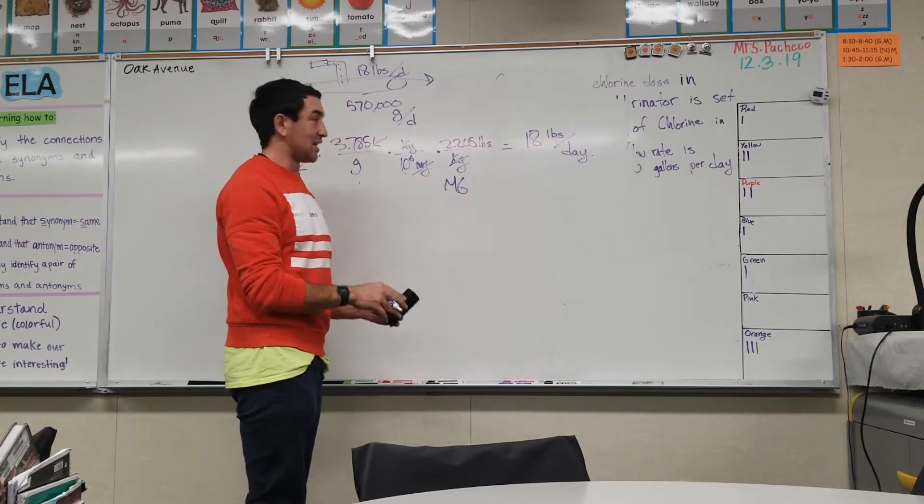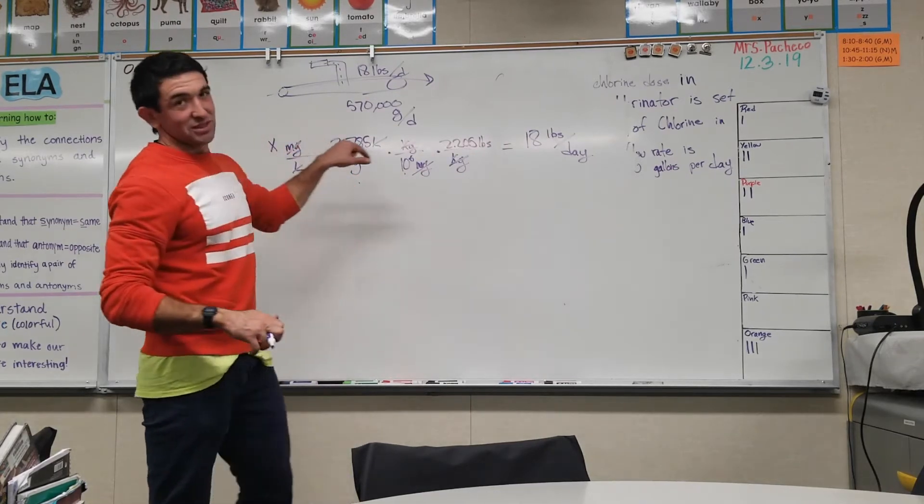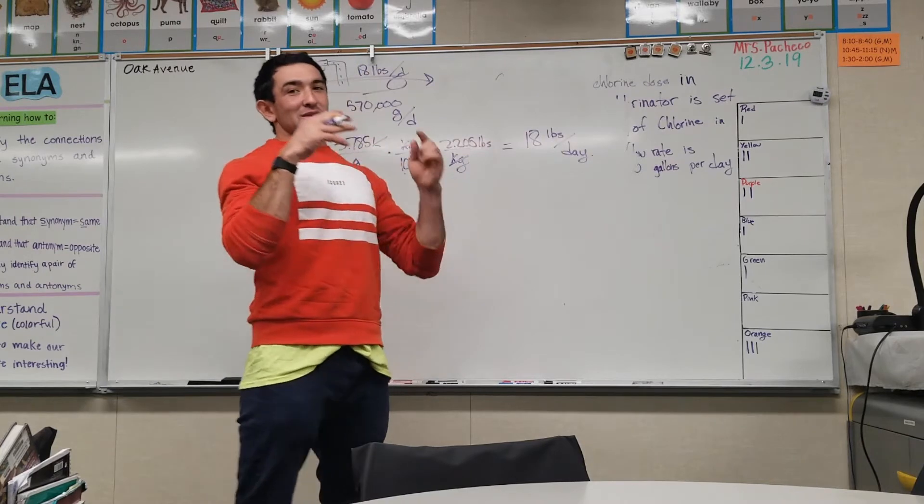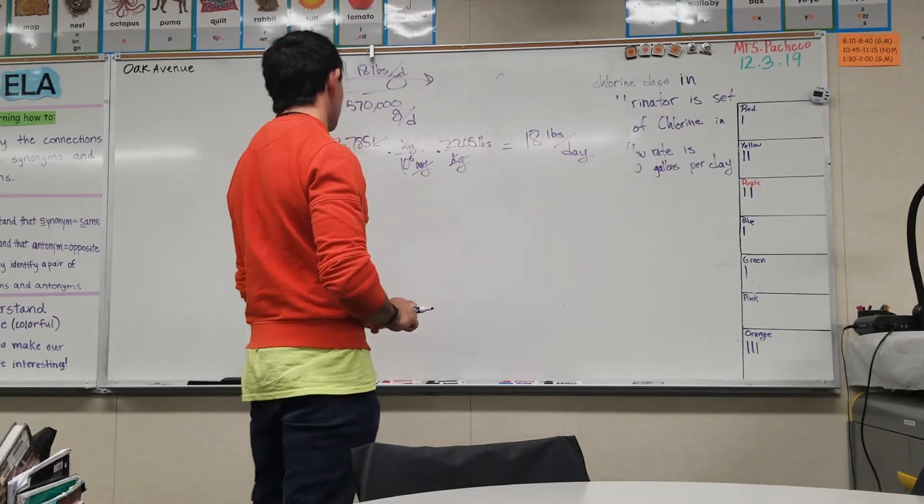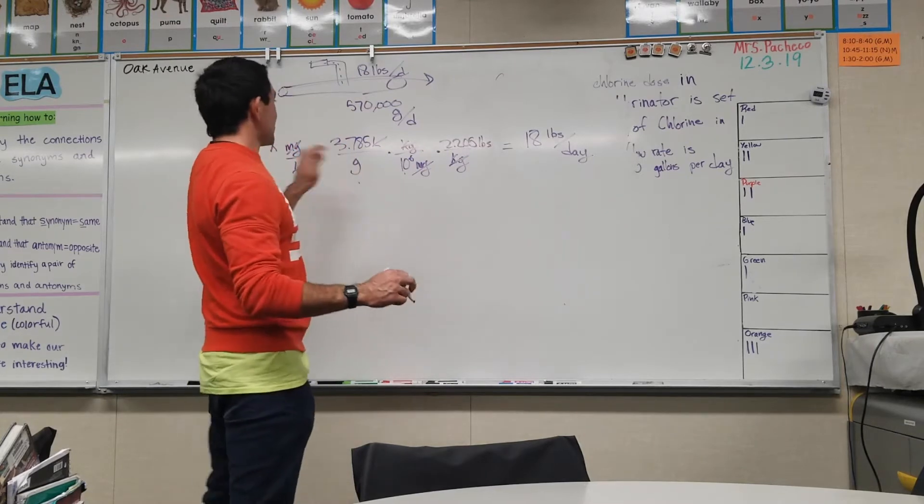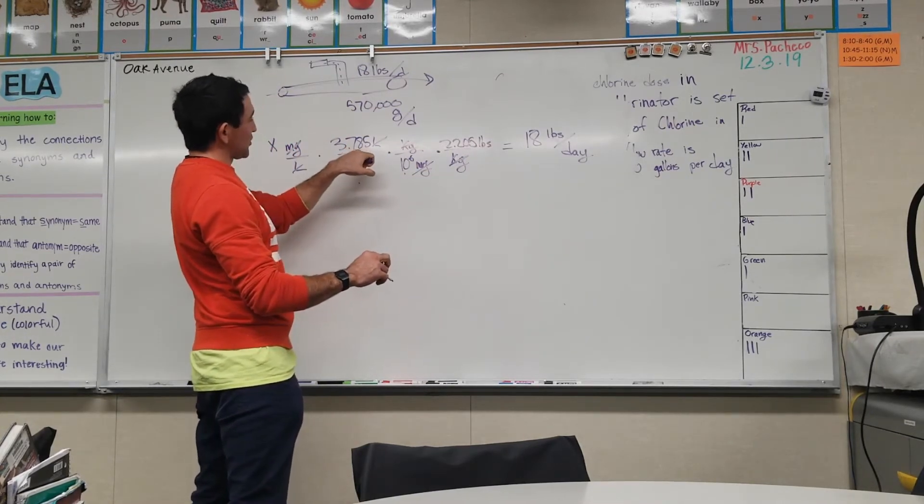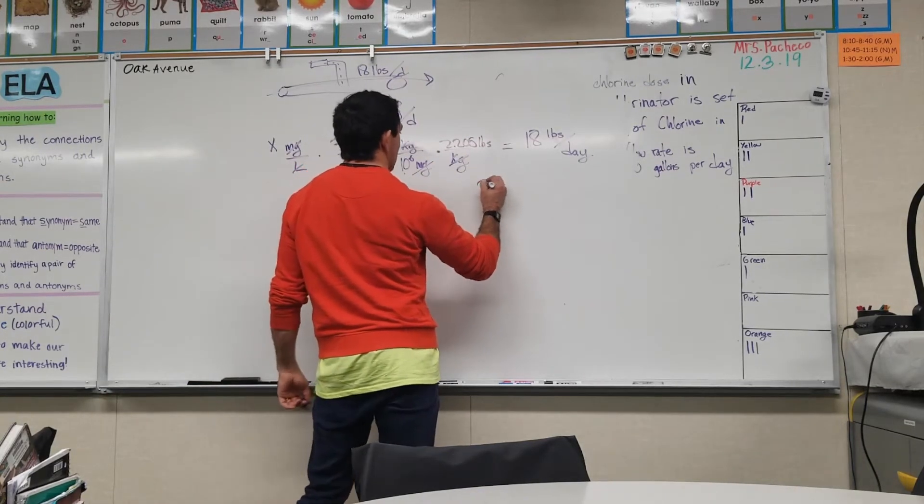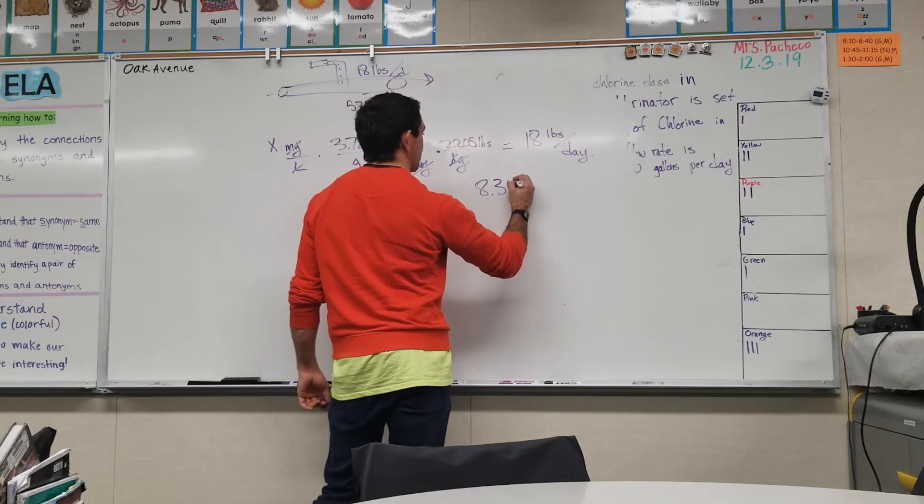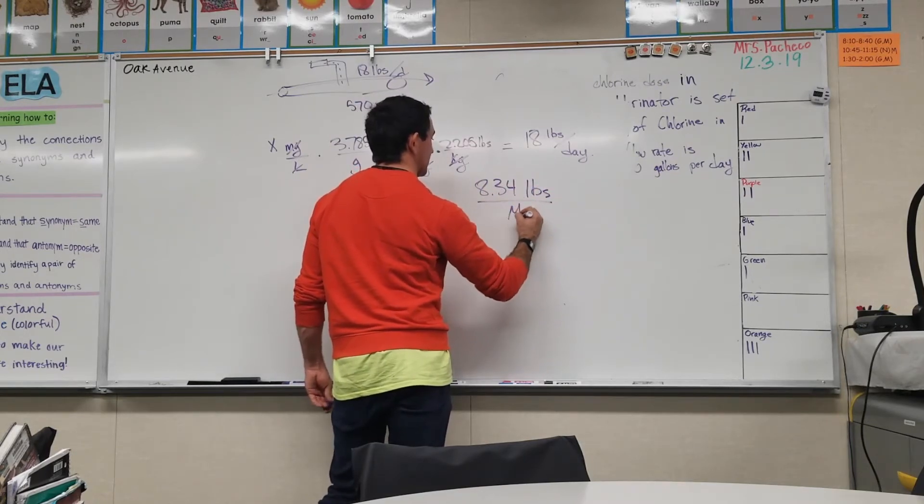That would finish as the MG that you see a lot, which is million gallons. It's capital MG. Lowercase mg is milligrams, uppercase MG is million gallons. When we solve here, we end up when you multiply 3.785 times 2.205, that is 8.34 pounds per million gallons per day.